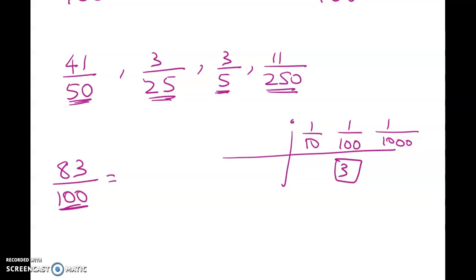So 83 over 100 is going to be 0.83, and that should be familiar from the last video when we did that the other way around.